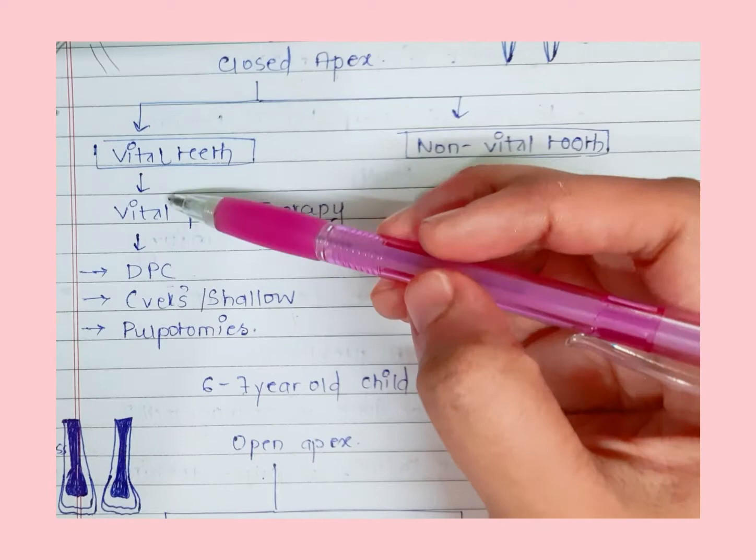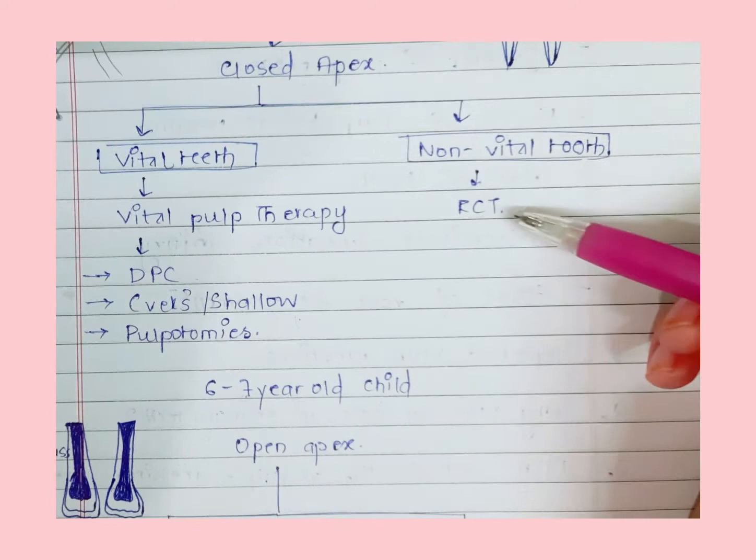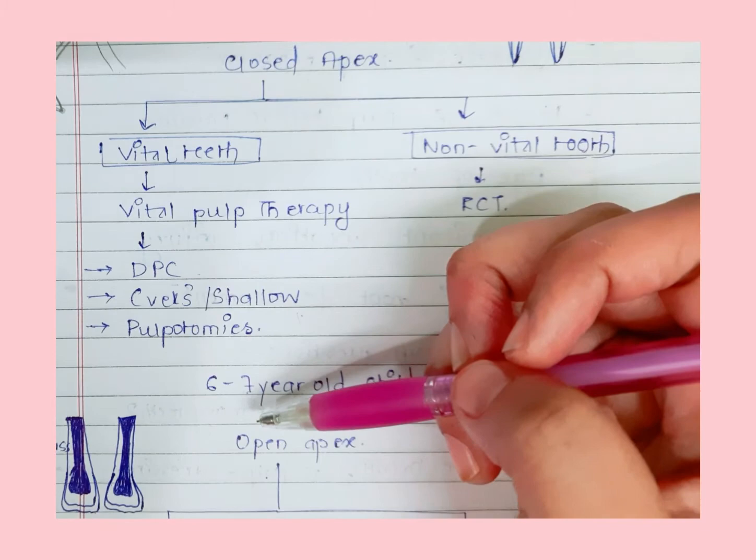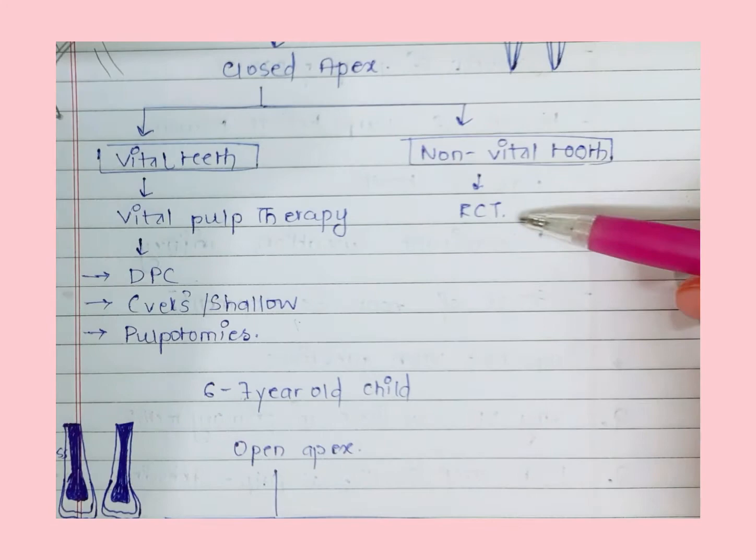We have two possibilities: the pulp could be vital or non-vital. If vital, we provide vital pulp therapies — it could be DPC, Cvek's pulpotomy (also called shallow or partial pulpotomy), or other pulpotomies such as partial or complete pulpotomy. If it is a non-vital tooth with a closed apex, we perform root canal treatment (RCT).